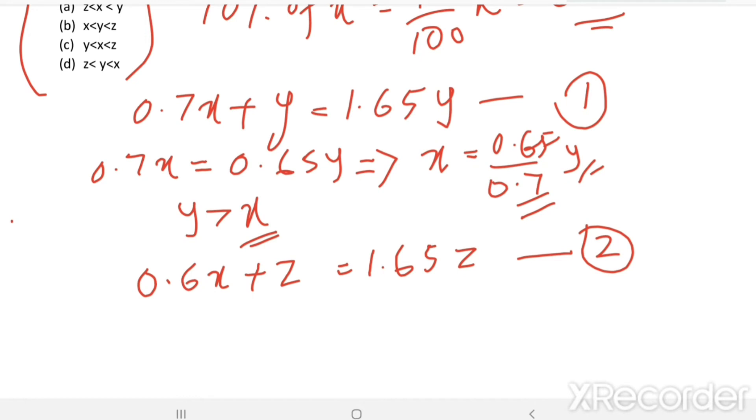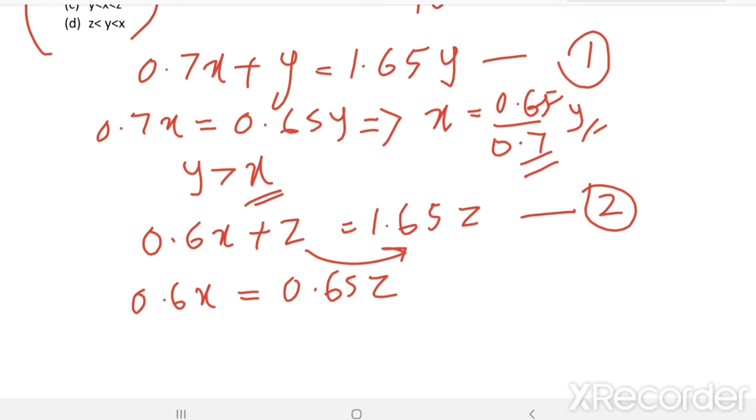Now see the second equation. 0.6x equals 0.65z. I took this z right side, then it becomes 0.65z. From here it is clear that 0.6x equals 0.65z. That means x is greater than z. Or z equals 0.6 divided by 0.65x. So z is only a fraction of x. That means x is greater than z.